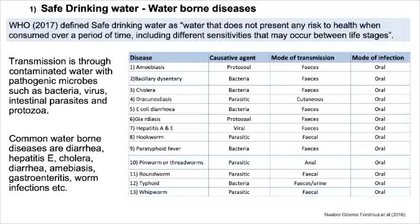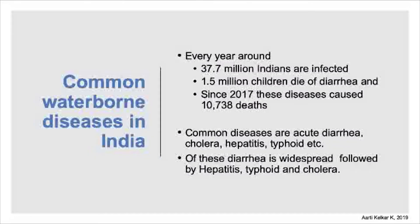In India, the common waterborne diseases are diarrhea, hepatitis E, cholera, amoebiasis, gastroenteritis and worm infections. Every year around 37.7 million Indians are infected due to waterborne diseases; 1.5 million children die of diarrhea, and since 2017 these diseases caused 10,738 deaths. Among adults, the common diseases are acute diarrhea, cholera, hepatitis and typhoid. Of these, diarrhea is the most widespread, followed by hepatitis, typhoid and cholera.